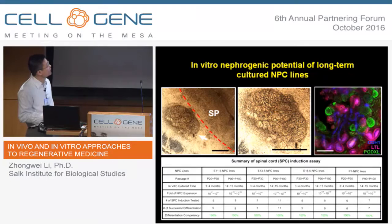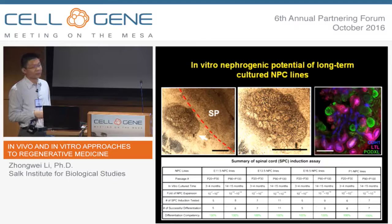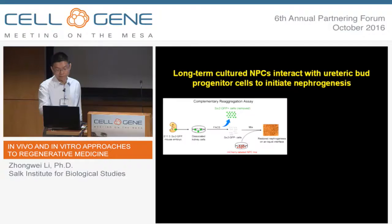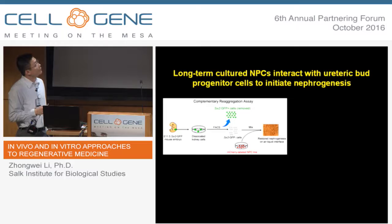More impressively, even after 90 or 100 passages — that is more than one year and billions-fold of expansion — these cultured MPCs can still differentiate very efficiently to nephrons. Another feature, as mentioned by Tracy, is that the MPCs interact with ureteric progenitor cells to initiate nephron genesis. To see if the cultured MPCs still retain this feature, we designed a complementary re-aggregation assay.